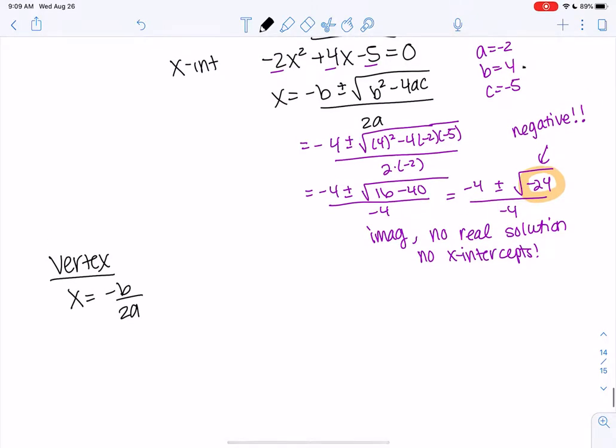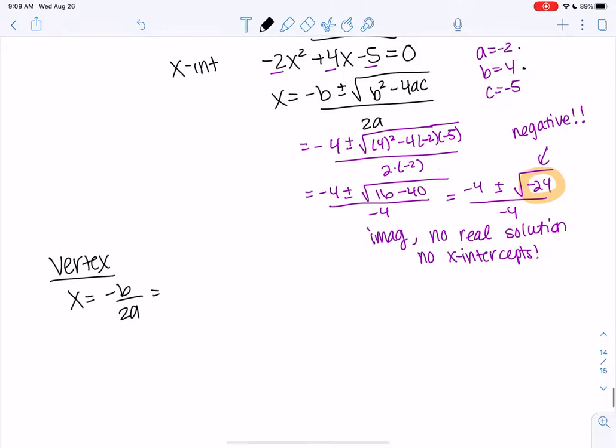So b is 4, a is negative 2. So negative 4 over 2 times negative 2, which is 1. So x equals 1 is the x value of my vertex. And then the y value, we just plug that in.